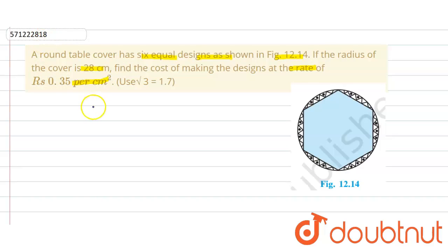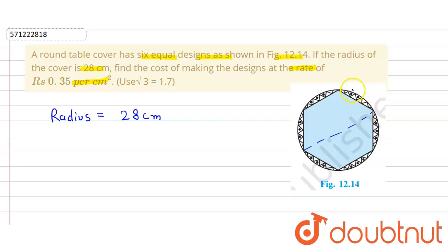The radius is given to be 28 centimeters. We first draw lines connecting the center to the edge, which divides the complete design into six equal sectors. We name the points A, B, and O, where all six sectors are equal.